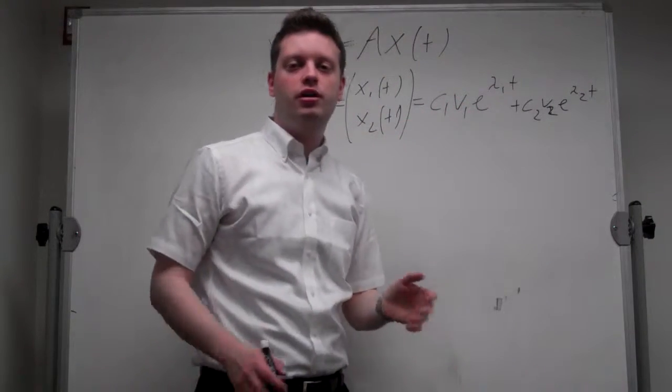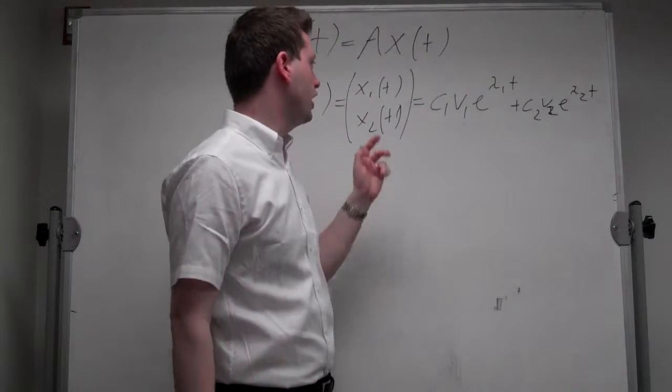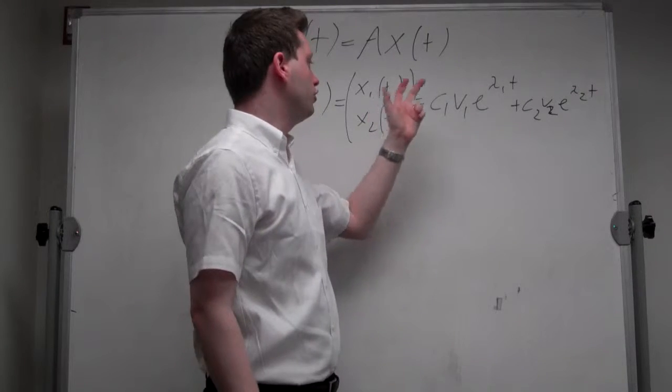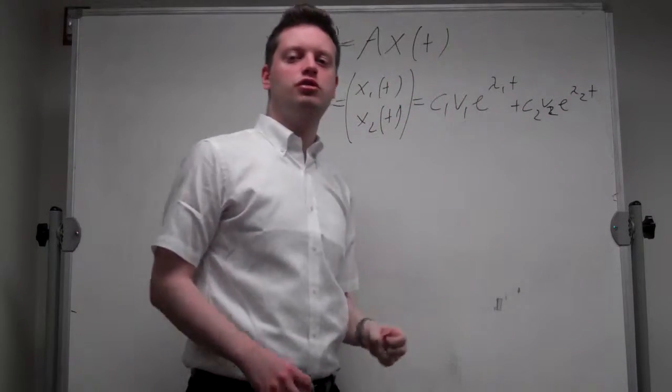These two constants are arbitrary, but if you have two initial conditions like x1 at t0 and x2 at t0 are equal to some numbers, then you can solve for the explicit solution of this system.